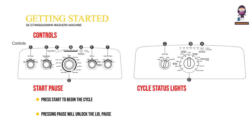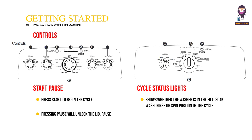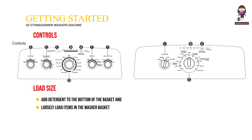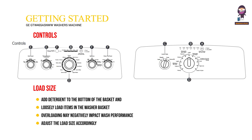Cycle Status Lights show whether the washer is in the fill, soap, wash, rinse, or spin portion of the cycle. For Load Size: add detergent to the bottom of the basket and Fabric Softener to the dispenser prior to loading clothes. Loosely load items in the washer basket. Overloading may negatively impact wash performance. Adjust the load size accordingly.